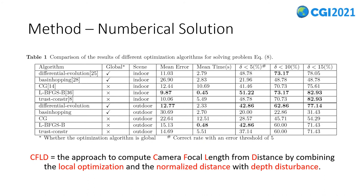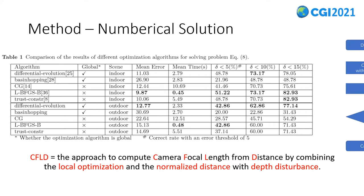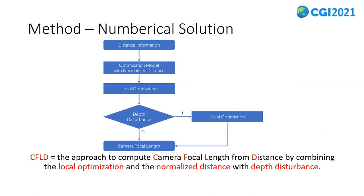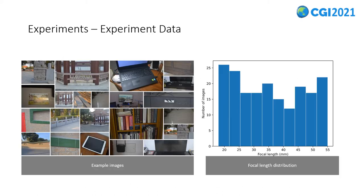To solve the optimization problem, we use some evolutionary algorithms to find the minimum. We conducted an experiment to identify the best optimization algorithm among several candidates in SciPy for solution. Based on the result, we selected a global optimization algorithm named differential evolution, and a local optimization algorithm LBFGSB with 10 random initial points to check. We finally defined CFLD as the approach to compute camera focal length from distance by combining the local optimization and normalized distance with depth disturbance.